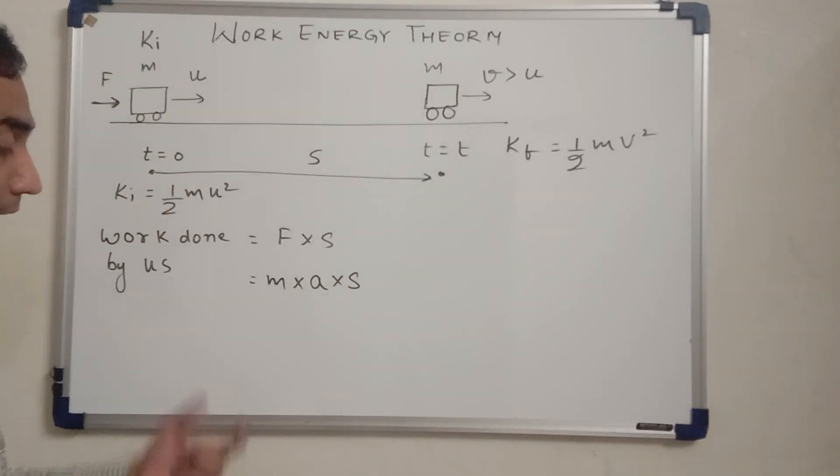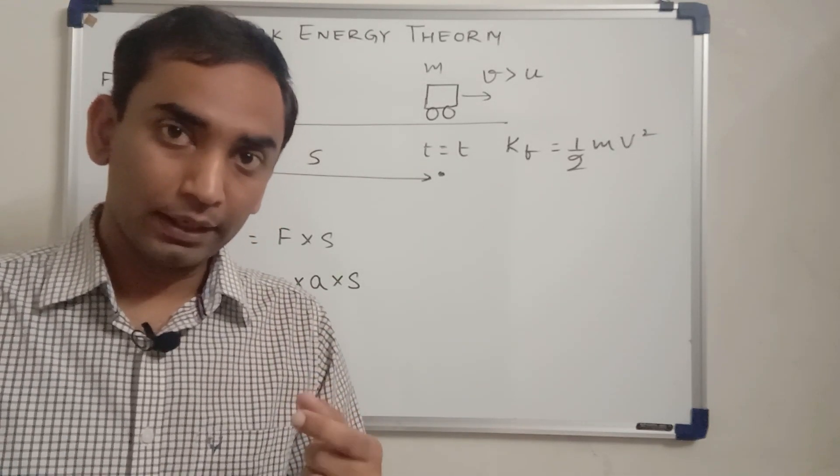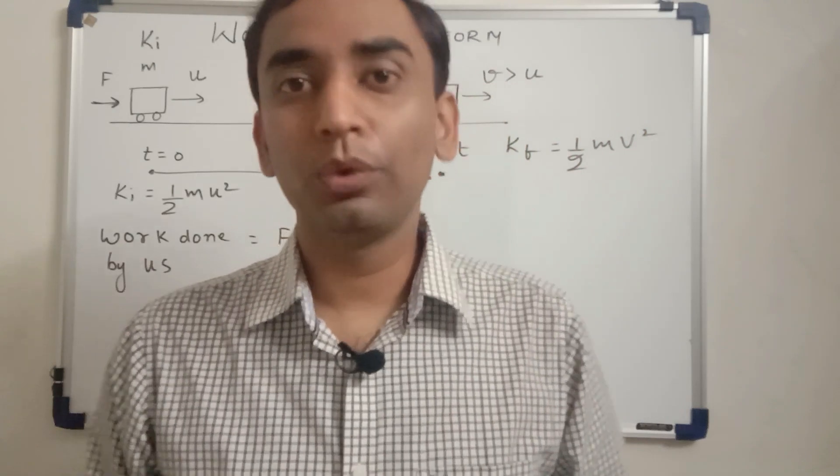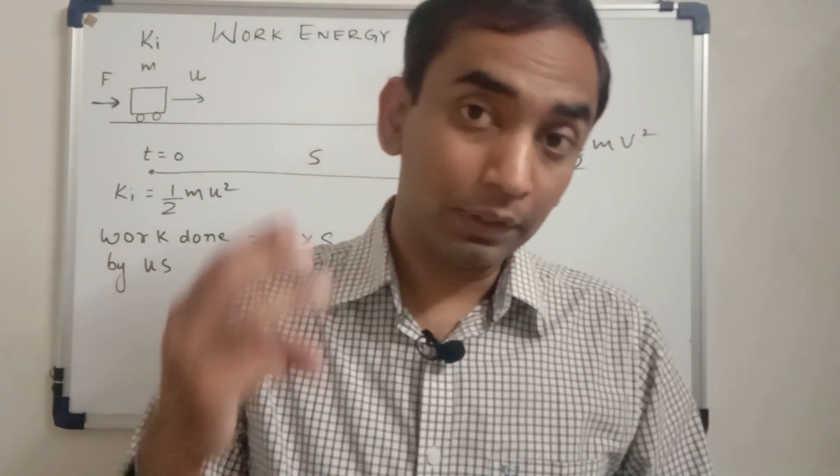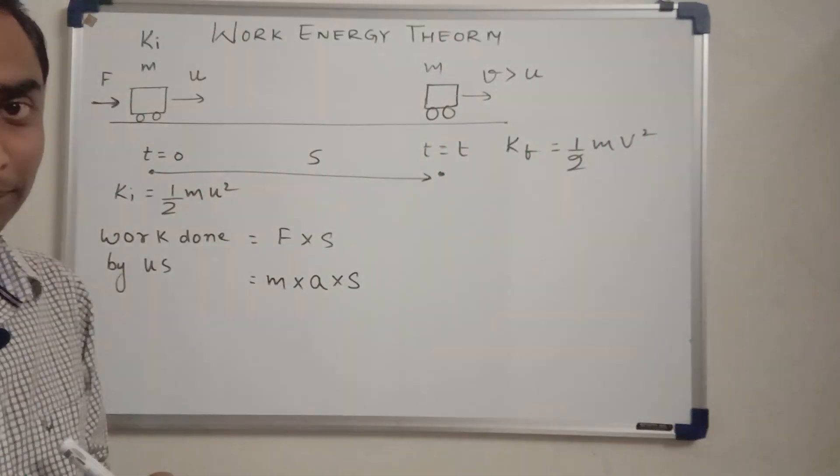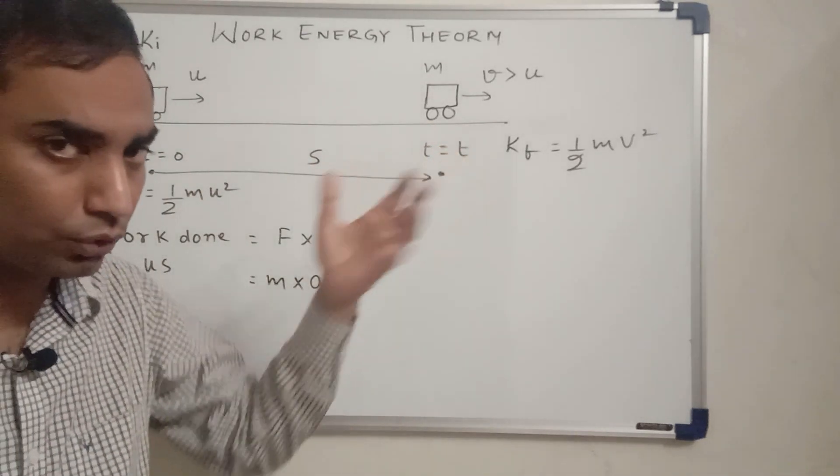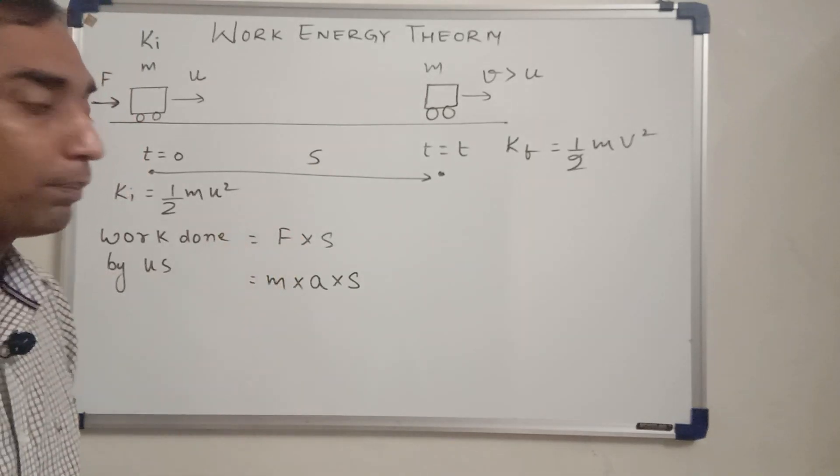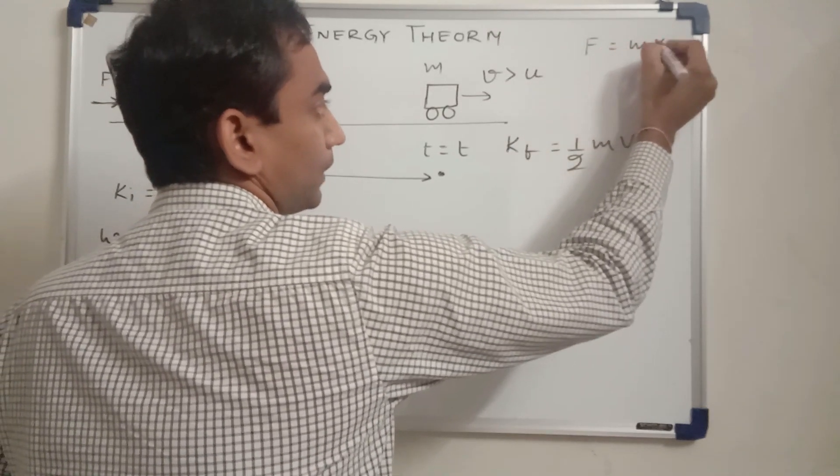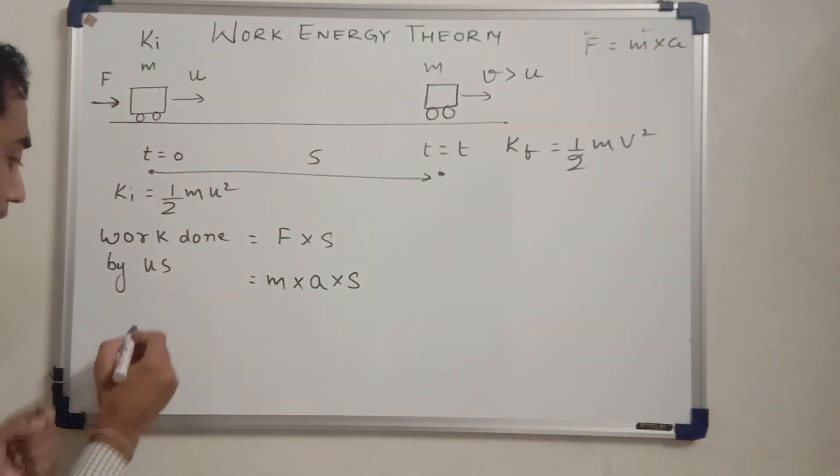I'm going to apply the laws of motion. s equals ut plus half at², then v² minus u² is equal to 2as, and a is equal to v minus u by t. Now these three equations of motion can only be applied if the acceleration is constant. For that, the force has to be constant. This force which we are applying is a constant force, it's not a variable force, so the acceleration produced would again be constant because F equals m times a. This is constant, this is constant, so acceleration is constant.